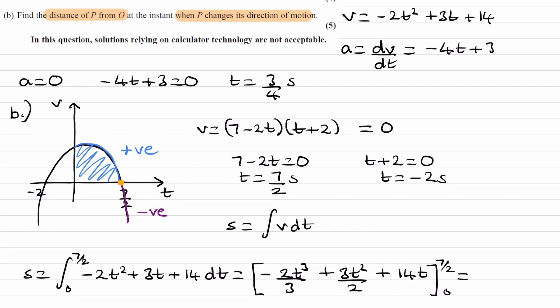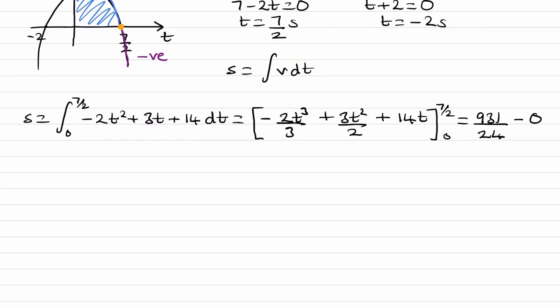Put in 7 over 2, we end up with 931 over 24. Put in 0, you just get 0. So the final answer would then just be 931 over 24 meters.